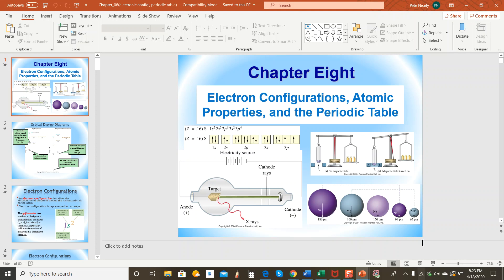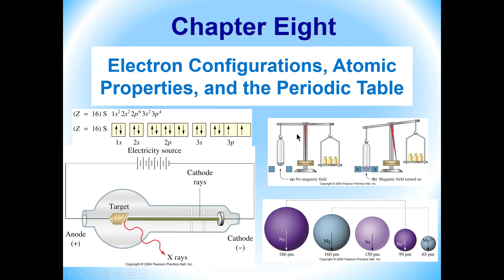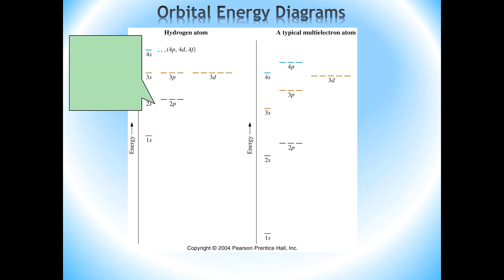In the last chapter, the very last thing we discussed was basically how the electrons are arranged in an atom. We defined a couple of terms: shells, orbitals, and so on. Now we're going to extend from that and start talking about exactly how the electrons are arranged in an atom. We'll start with the simplest atom, the hydrogen atom, and discuss how the electrons are arranged in terms of their energies.